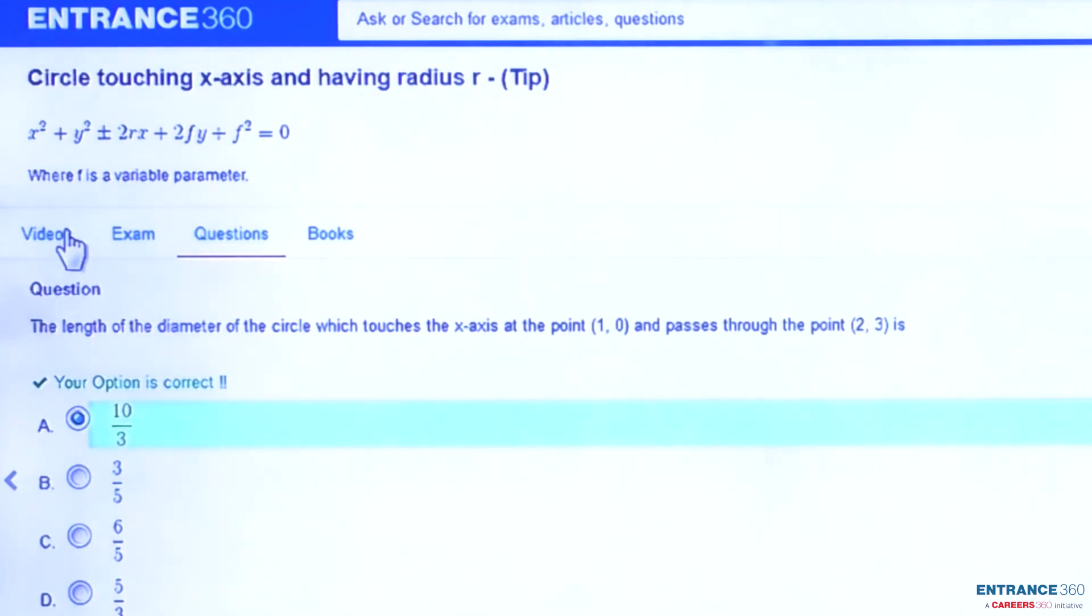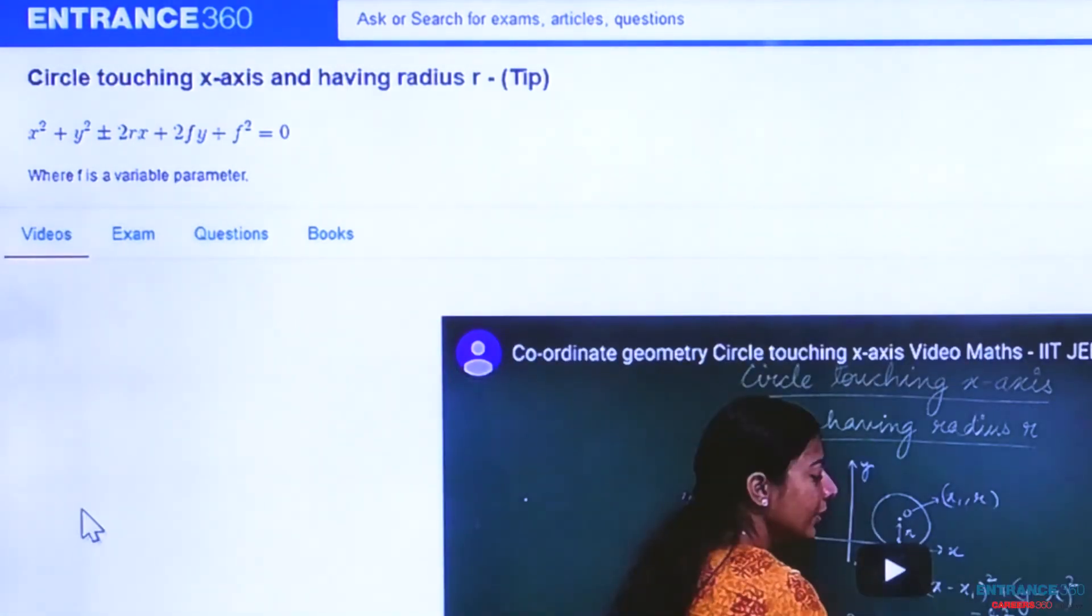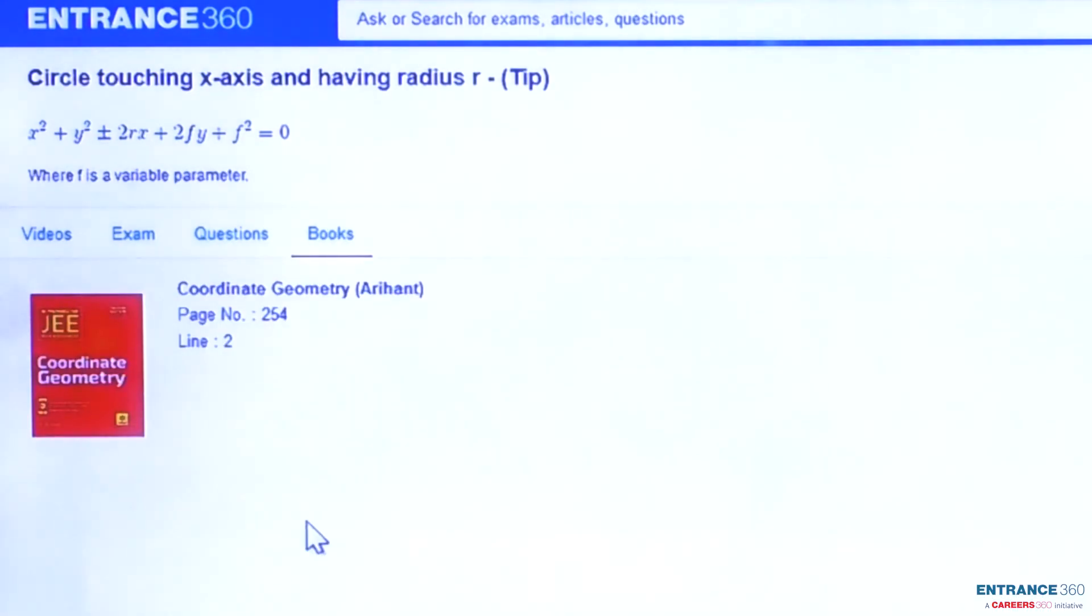Further if you have any doubt regarding this question or concept then you can also watch the video. It is around 2 or 3 minutes. And you can also read the books. There is a coordinate geometry Arihant publication book. You don't need to read whole books. You have to stick on page number 254 and line number 2.